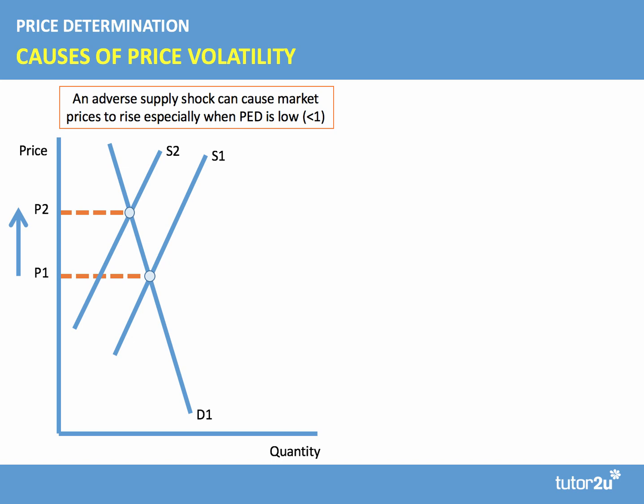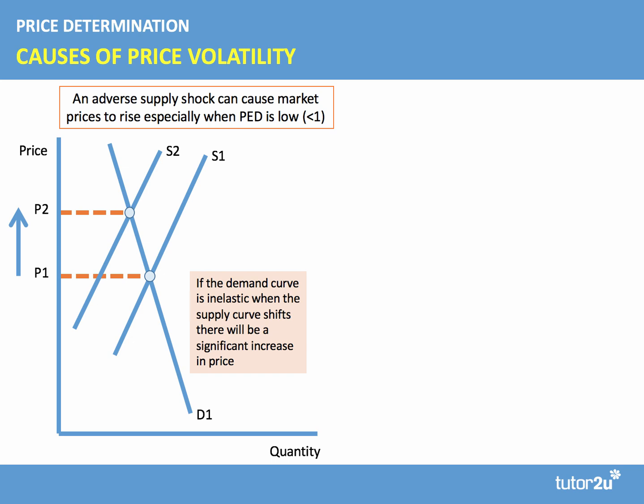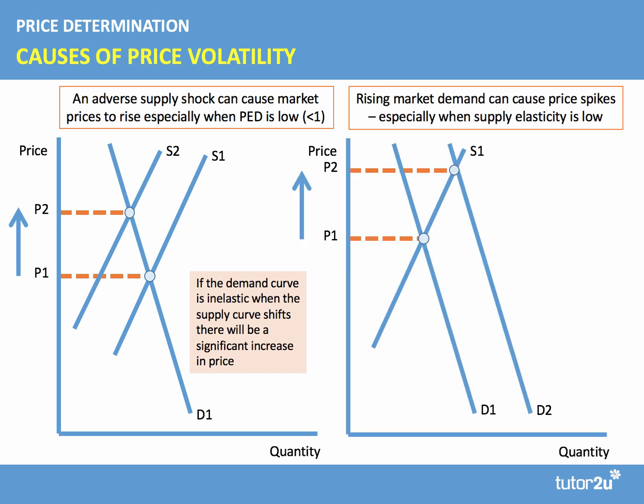If demand is inelastic — drawn as a relatively inelastic demand curve — then when the supply curve shifts to the left, there will be a significant increase in the market clearing price. It is this combination of a supply shock and inelastic demand that can cause an amplified level of price volatility.